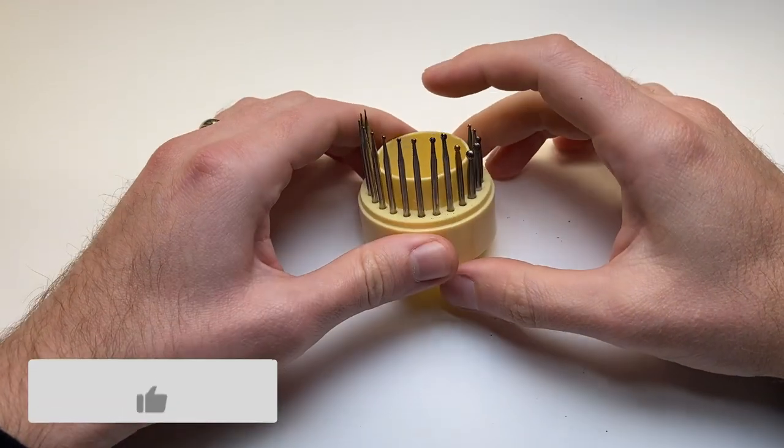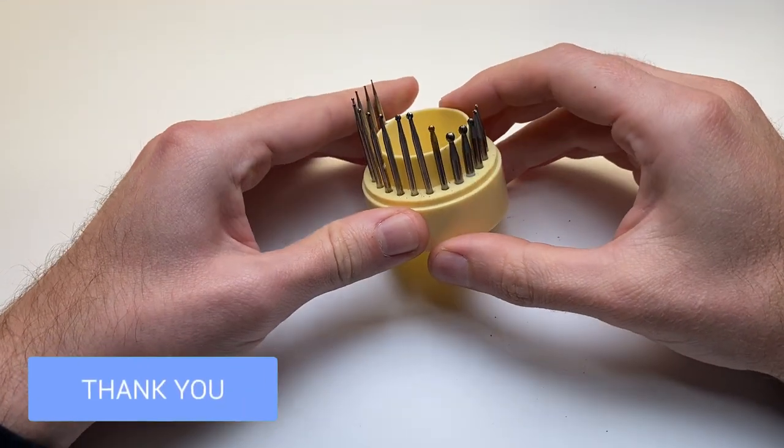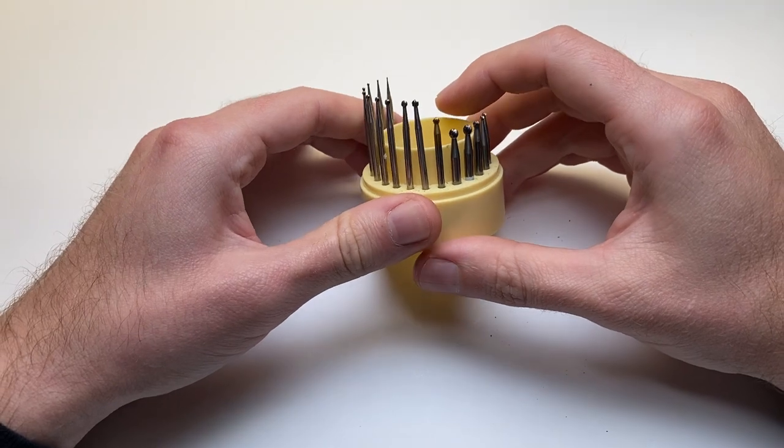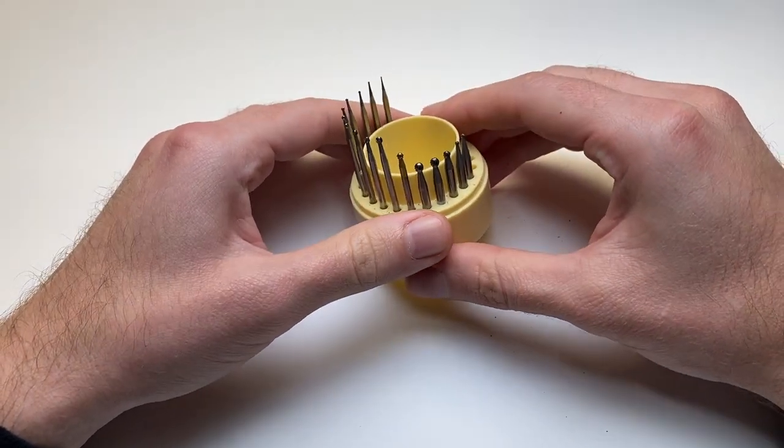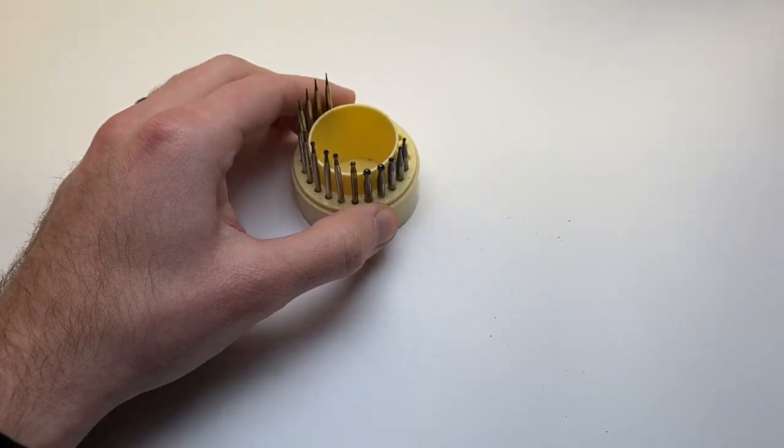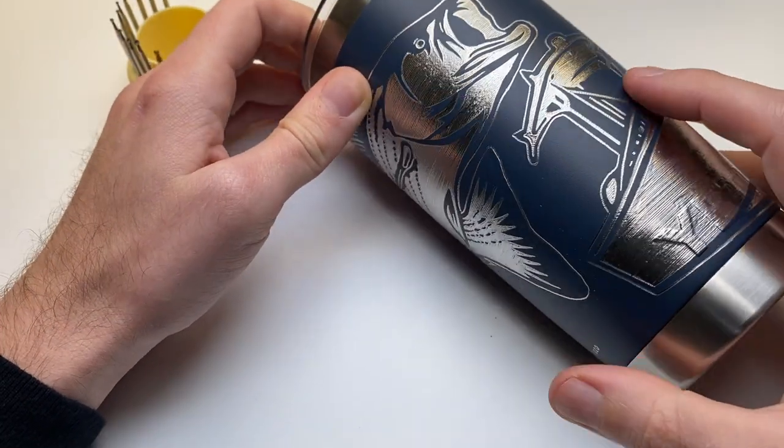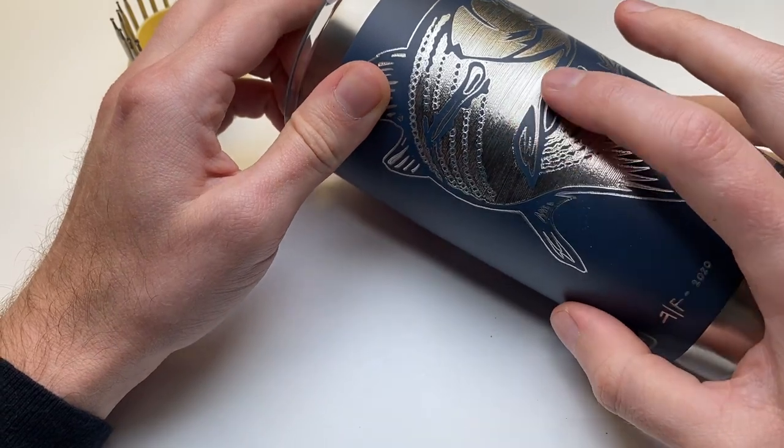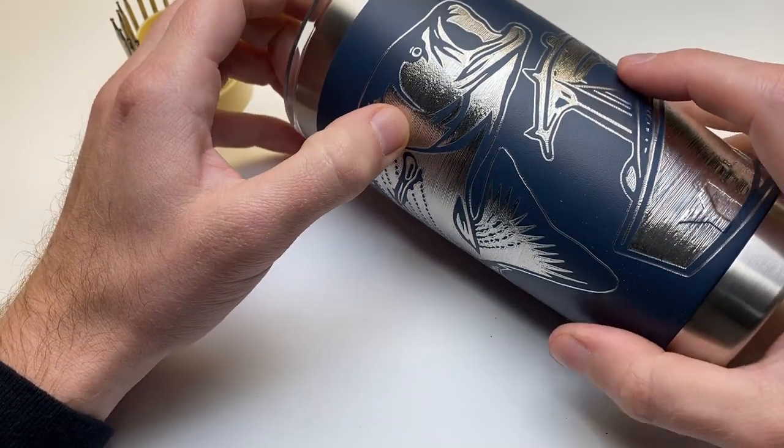Alright guys next up is going to be tungsten carbide burrs. These burrs is usually what I use nowadays. I started doing almost all of my cups with tungsten carbide because they last so long and the texture they leave is just crazy. It shines pretty cool.